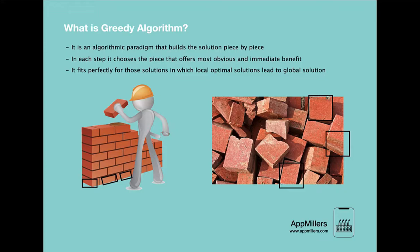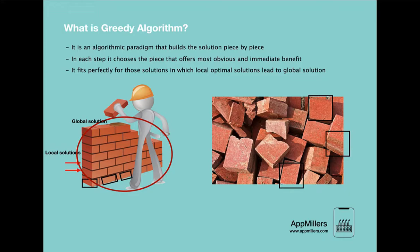The third property of a greedy algorithm is that it fits perfectly for problems where choosing a local optimum solution also leads to a global optimum solution, known as the greedy choice. In our example, building each layer optimally represents a local solution. Combining all those best local solutions gives us our complete wall — the global solution. So by finding the best local solution at each step, we can find the global best solution.